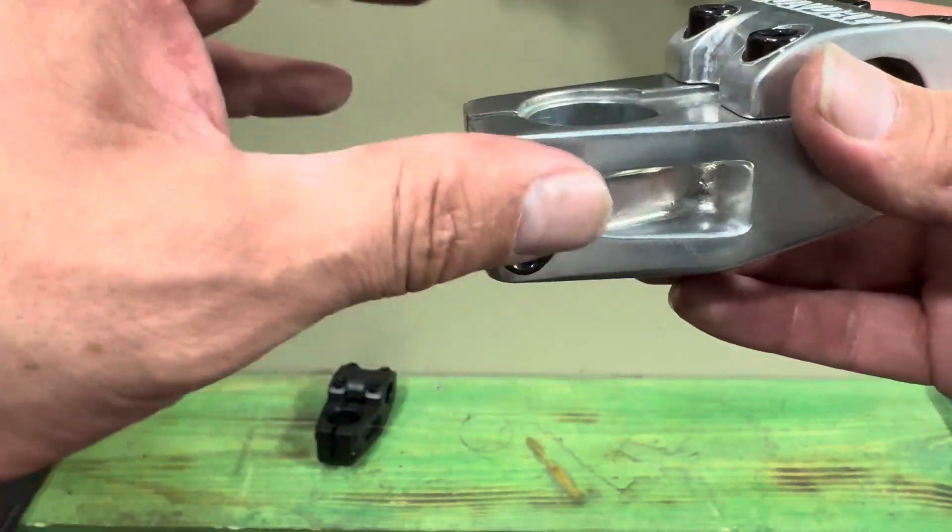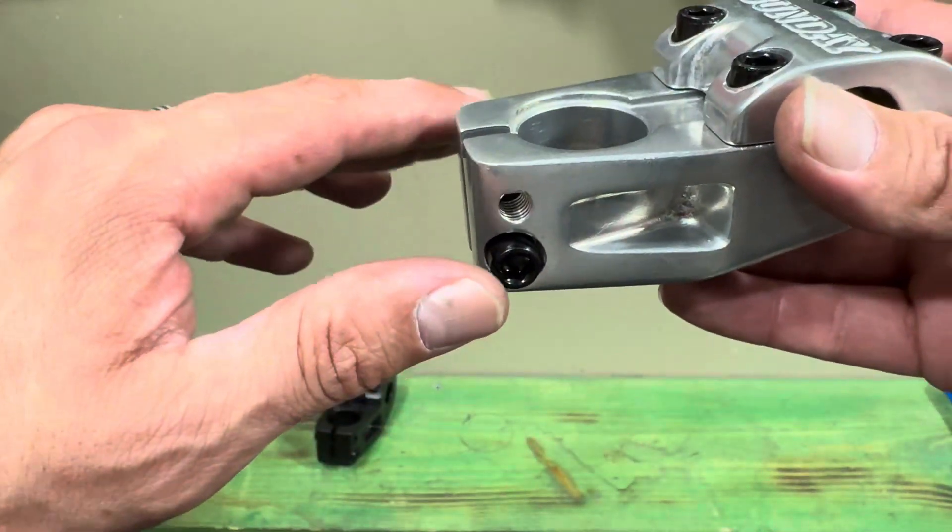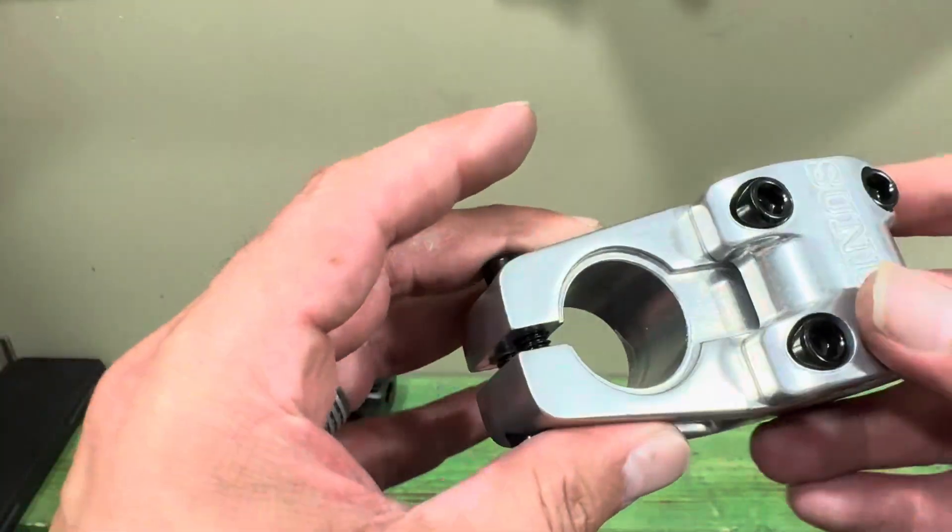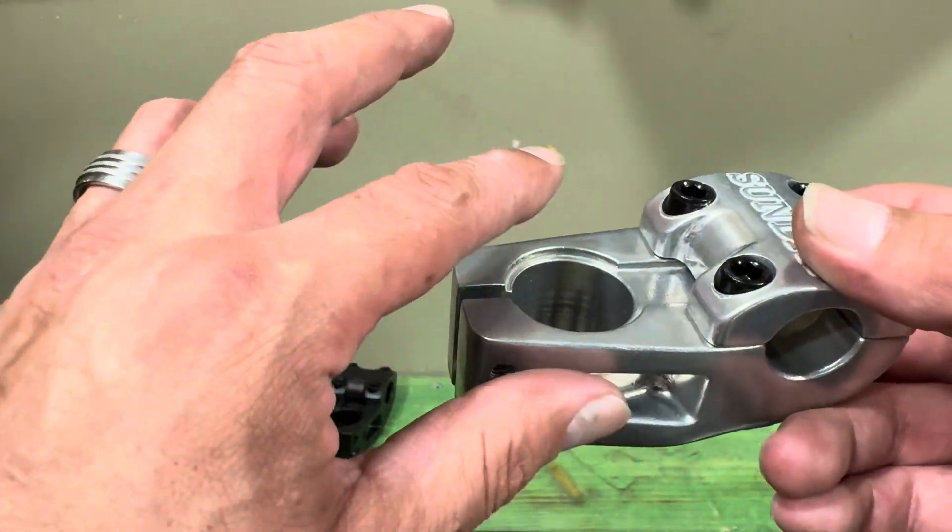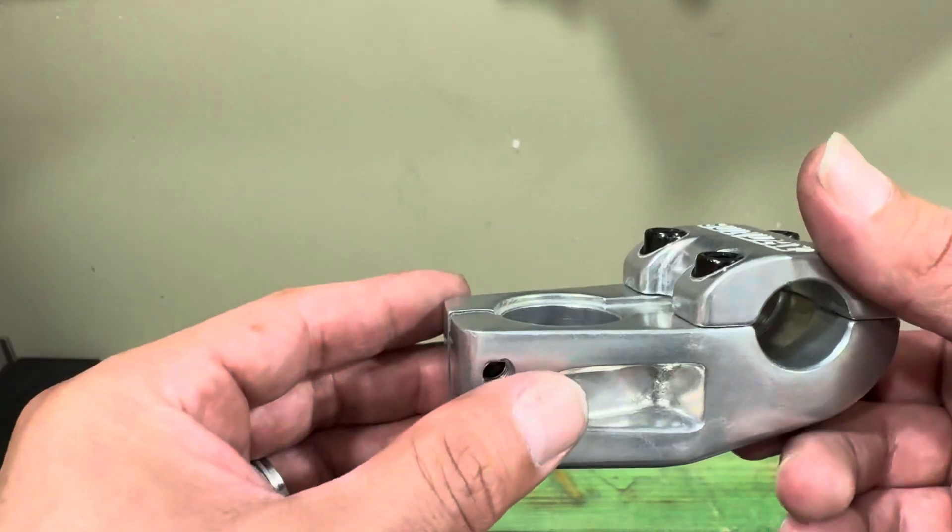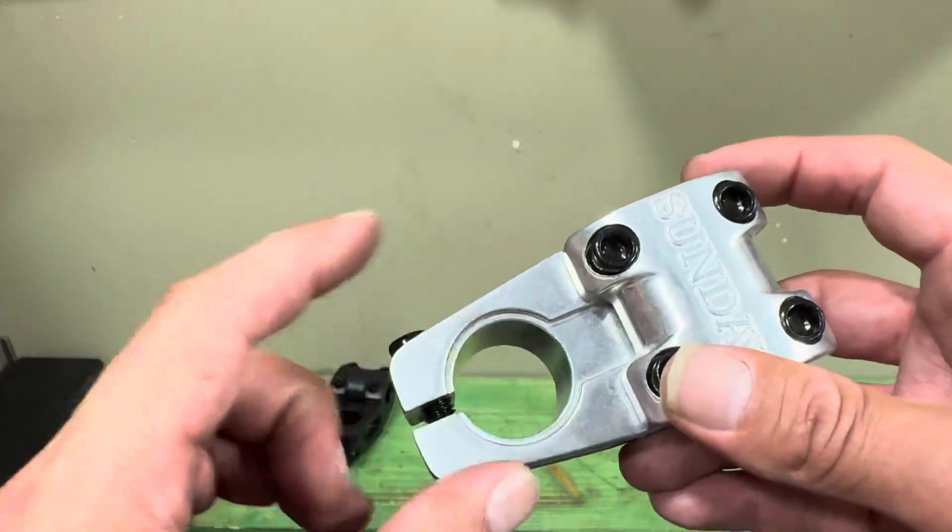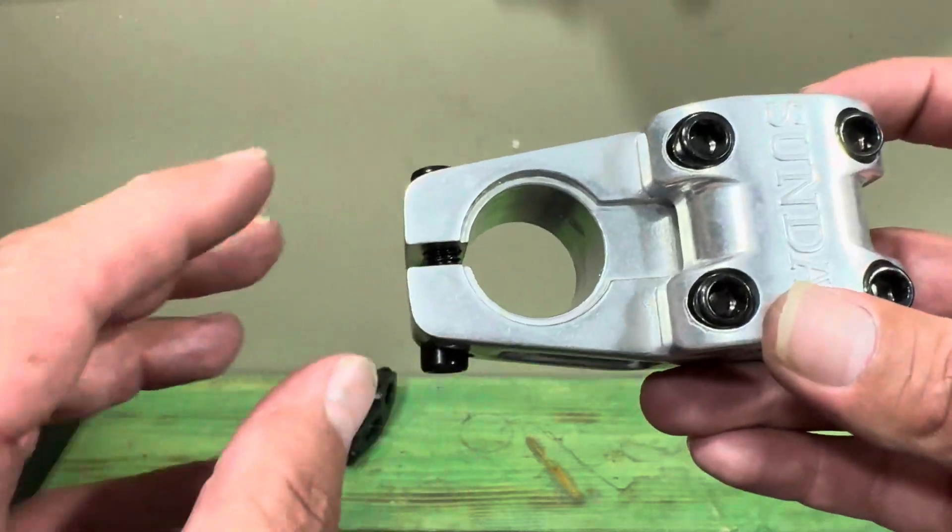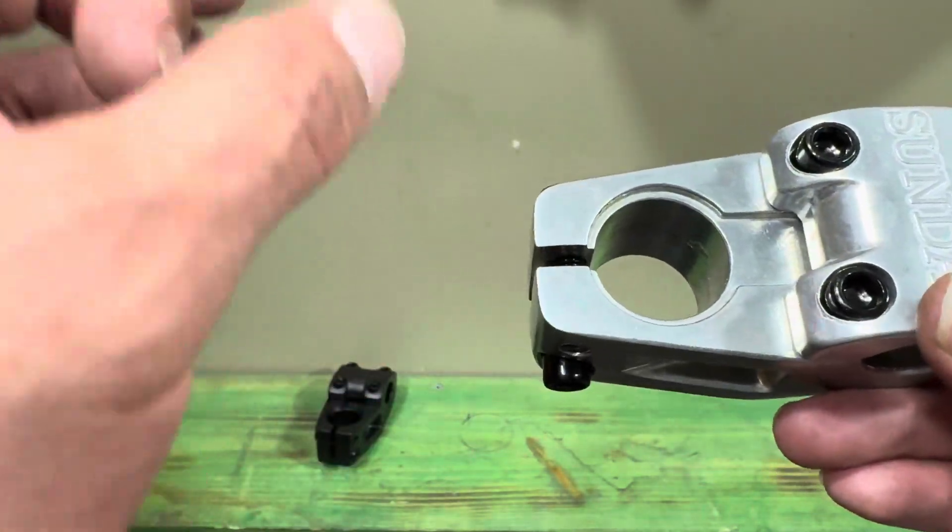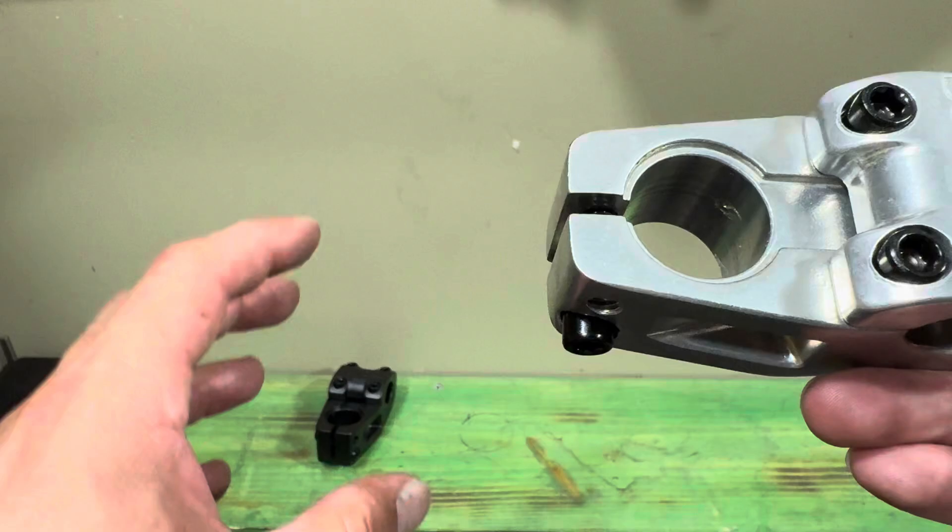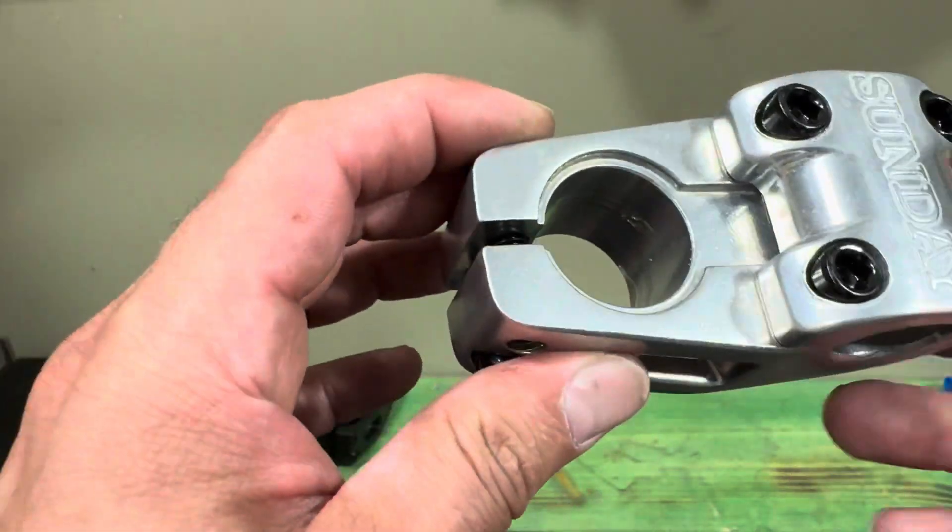So when you put your fork cap on there, it'll sit right here and be relatively flush on your stem and just look a lot better than having your little stem cap stick up five millimeters or whatever it may be. This hole right here is an inch and an eighth hole designed for inch and an eighth threadless forks. Usually if your fork doesn't have threads on it, it's usually an inch and an eighth.